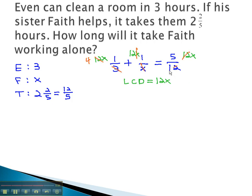The x's divide out, and the 12's divide out, and we're left with 4x plus 12 equals 5x.